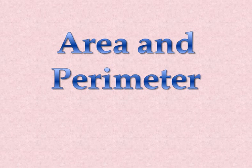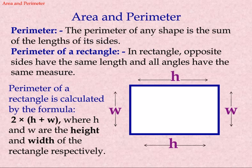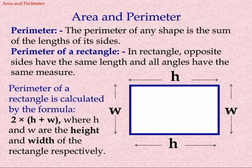Topic: area and perimeter. The perimeter of any shape is the sum of the length of its sides.